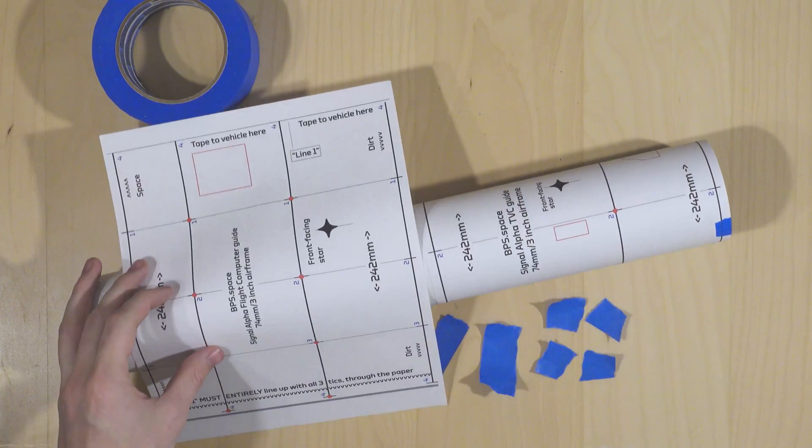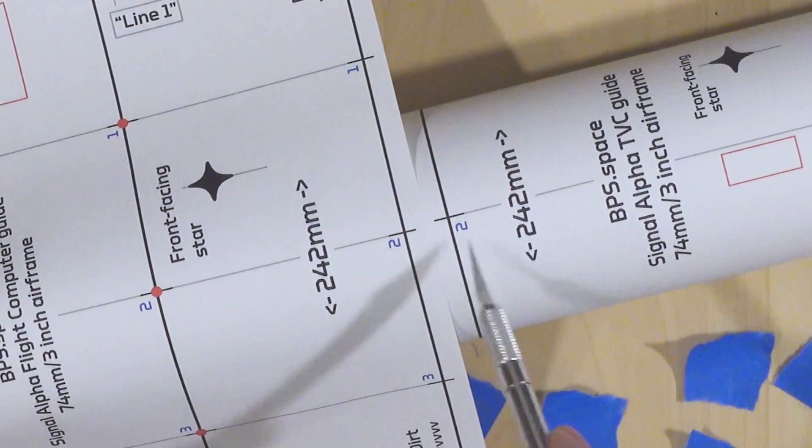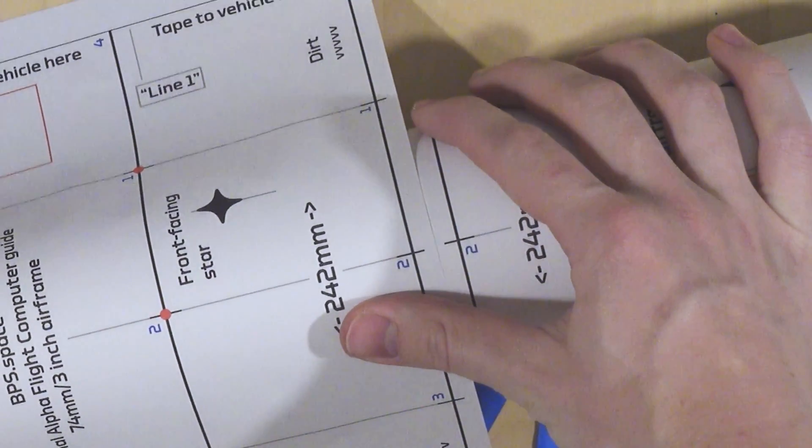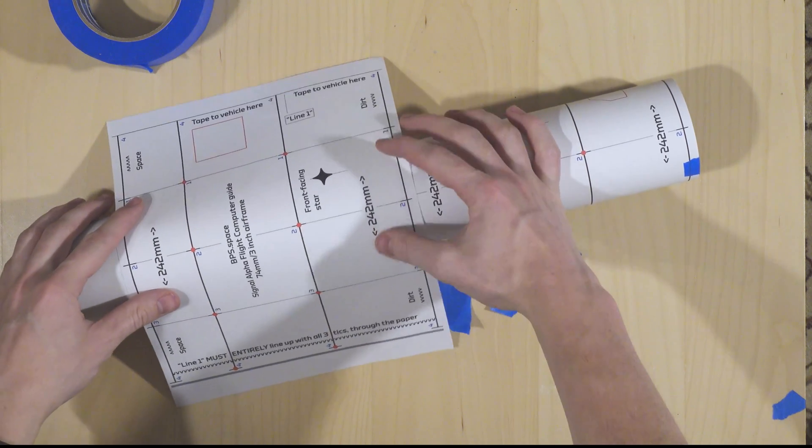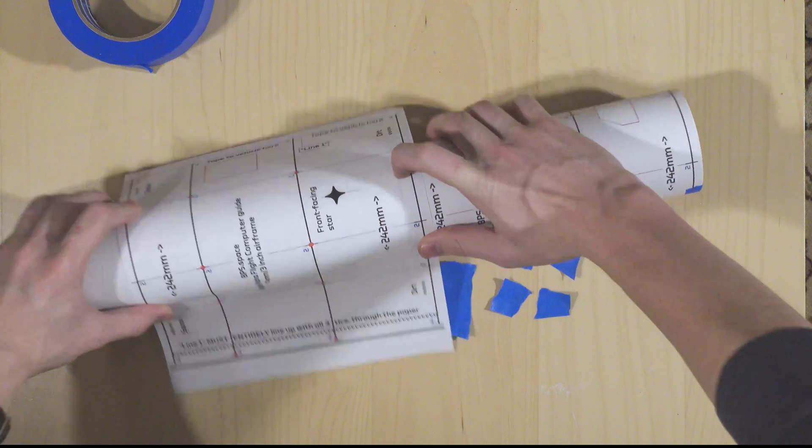Now the most important thing here is that we line up these little blue numbers. 2 and 2 here should always be in line, along with 1 and 1, 3 and 3, and 4 and 4. In the same manner as the TVC mount, this can actually go anywhere on the rocket, up or down. As long as these numbers are in line, you'll be good to go.